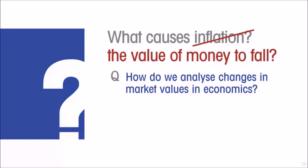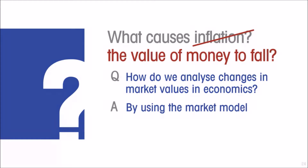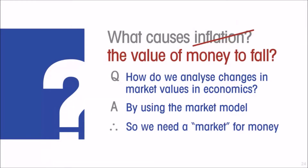In economics, how do we analyze changes in market values? How do we try to understand why the values and therefore the prices of commodities rise and fall? We do that by looking at the market for that thing. So if we want to understand why the value of money changes, then we need a market for money.